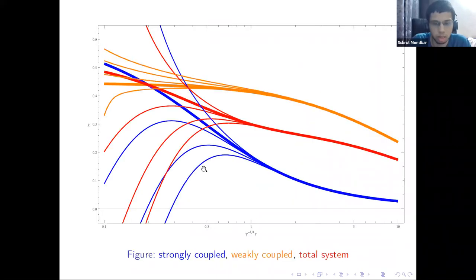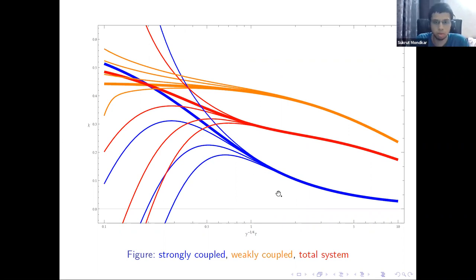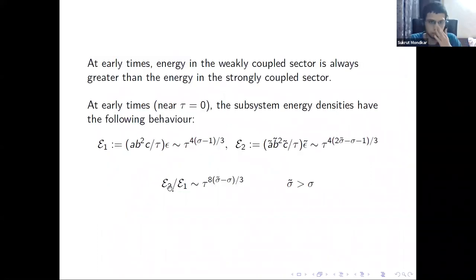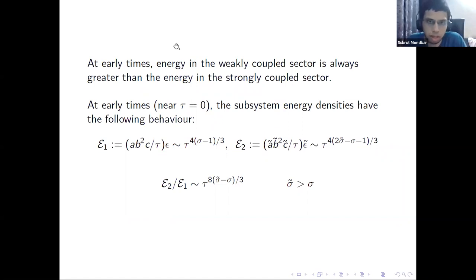A clearer plot shows the thick lines as attractor solutions, with thin lines being neighboring trajectories that eventually converge to the attractor solutions. Blue is for the strongly coupled system, orange for the weakly coupled system, and red for the total system. One feature of this model is that the energy density in the weakly coupled system is always greater than that in the strongly coupled system at early times.